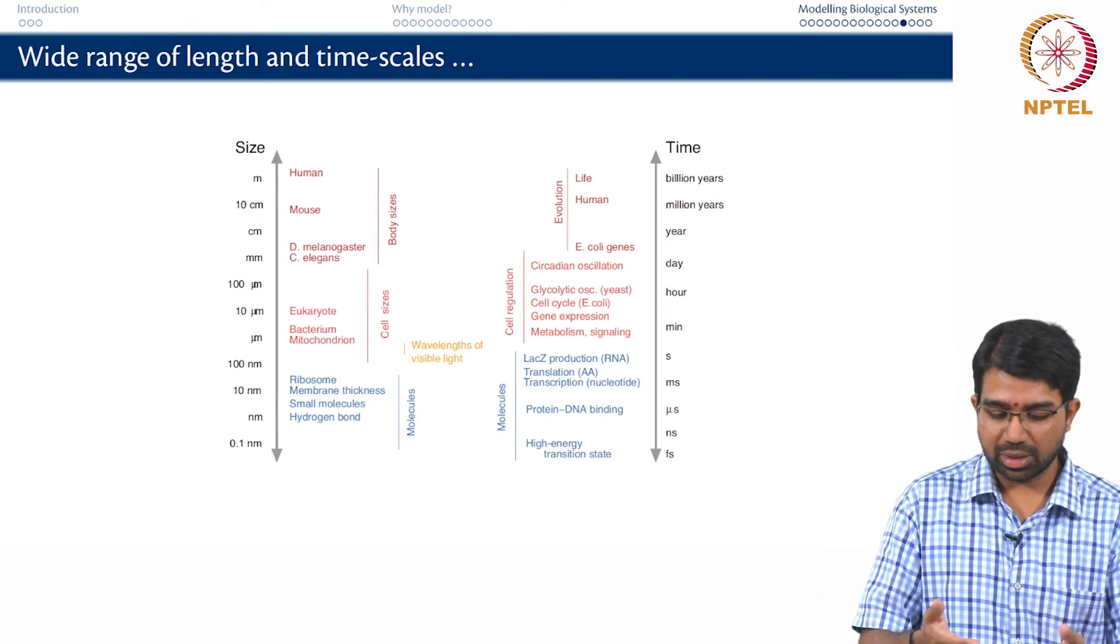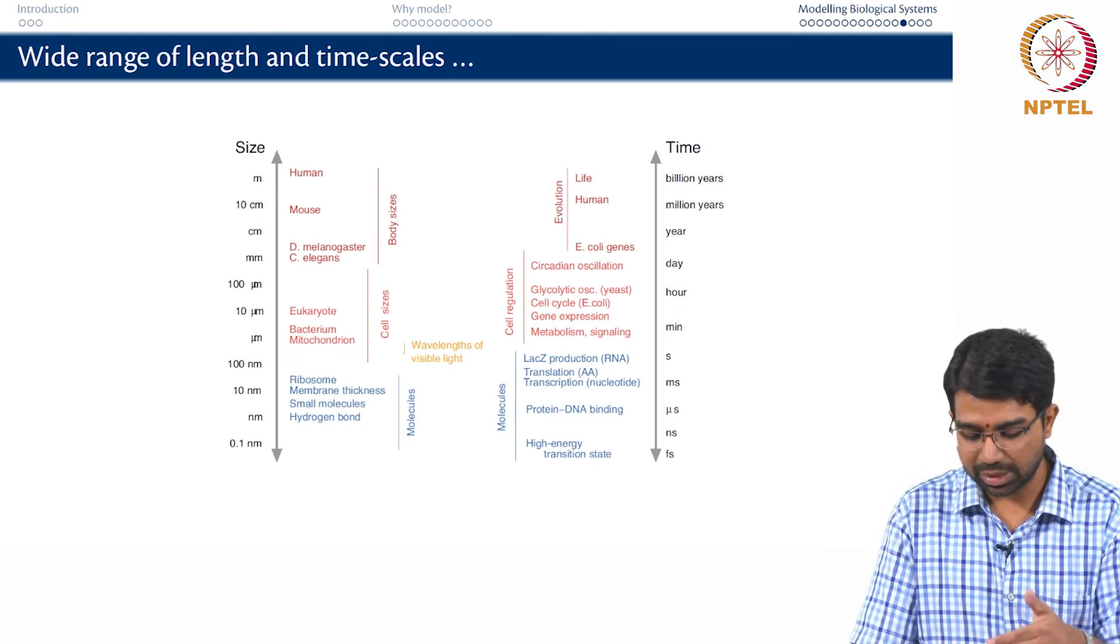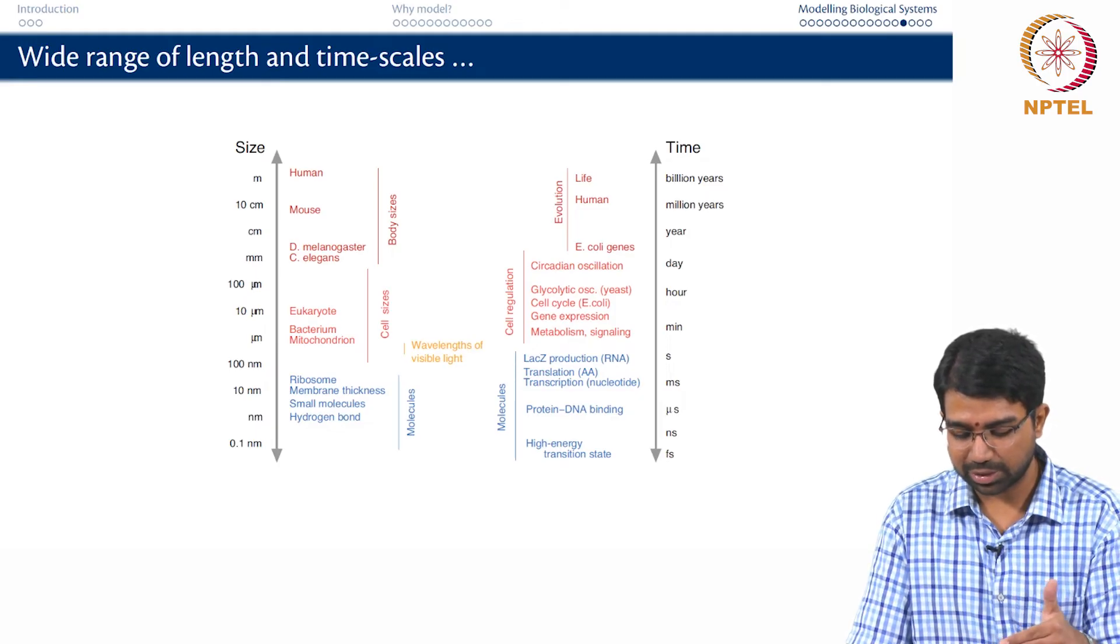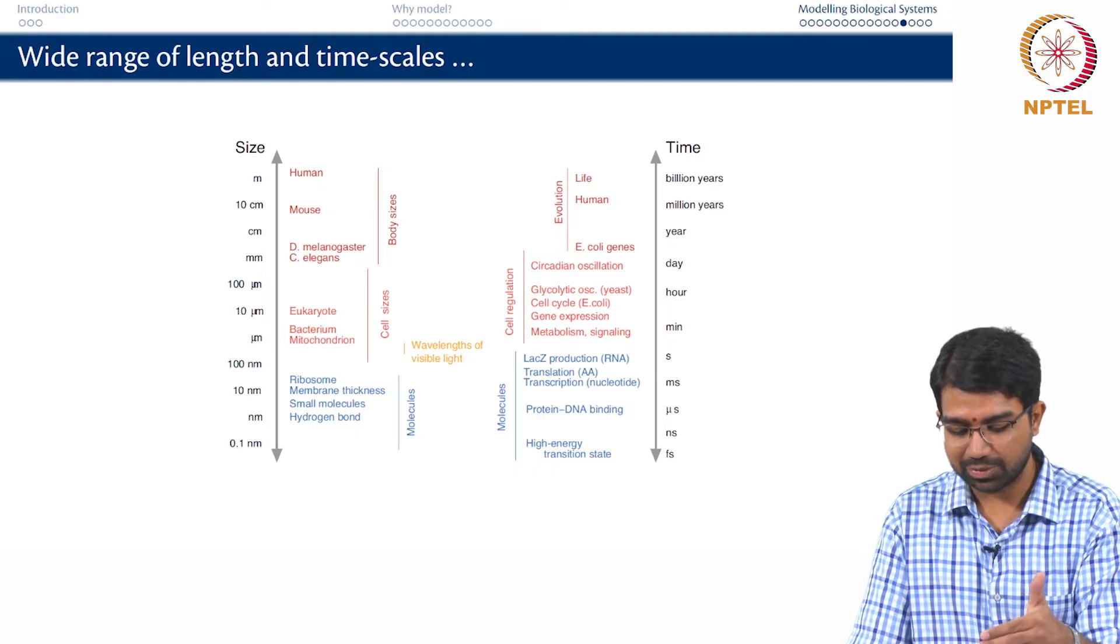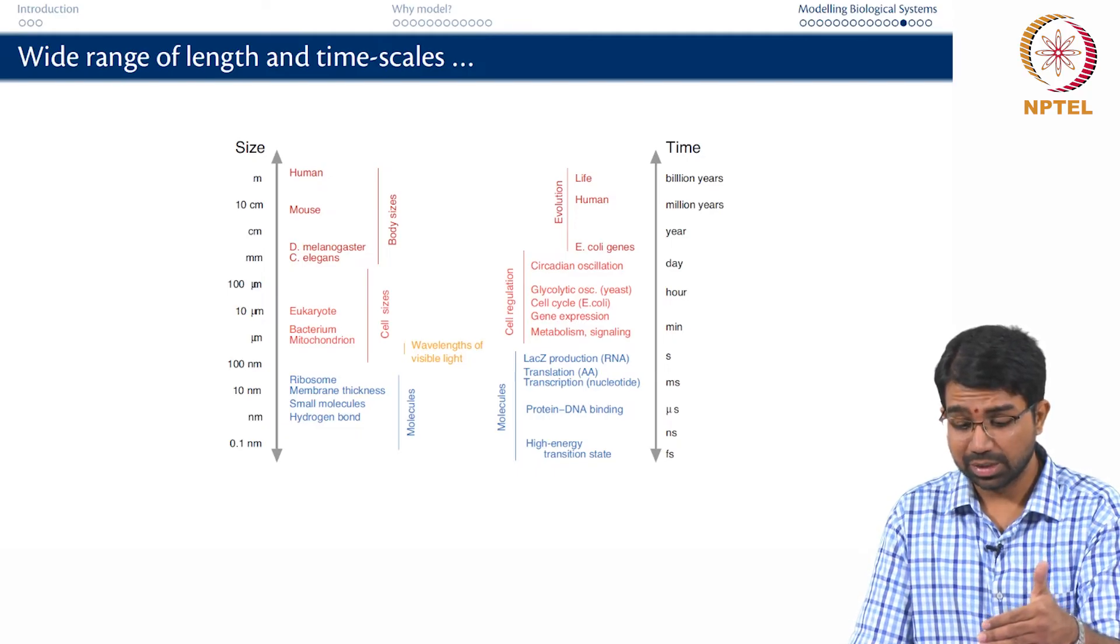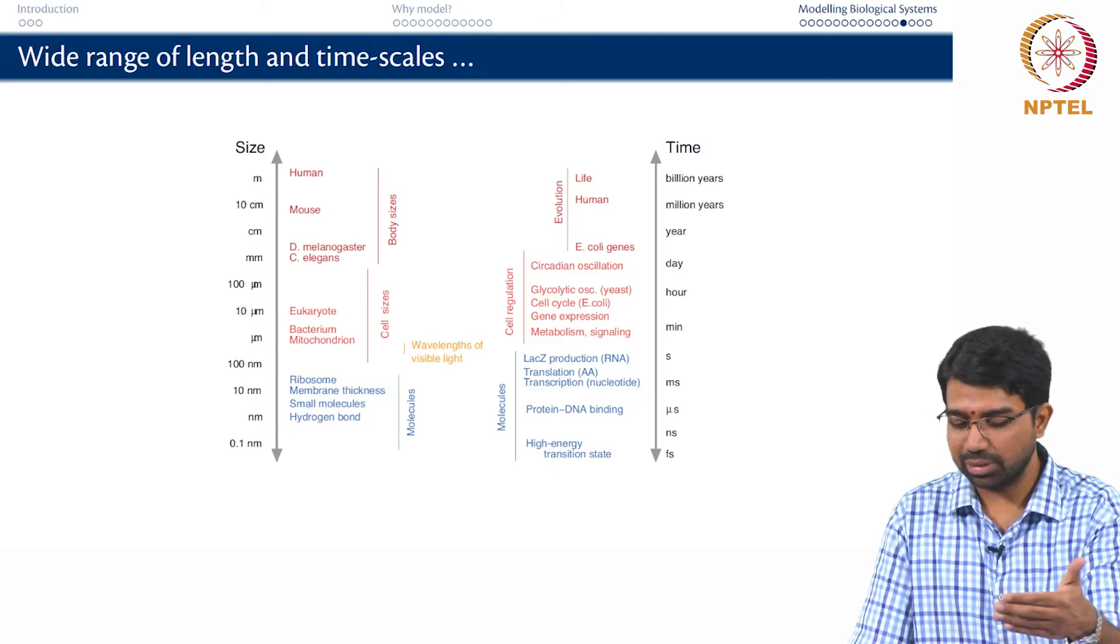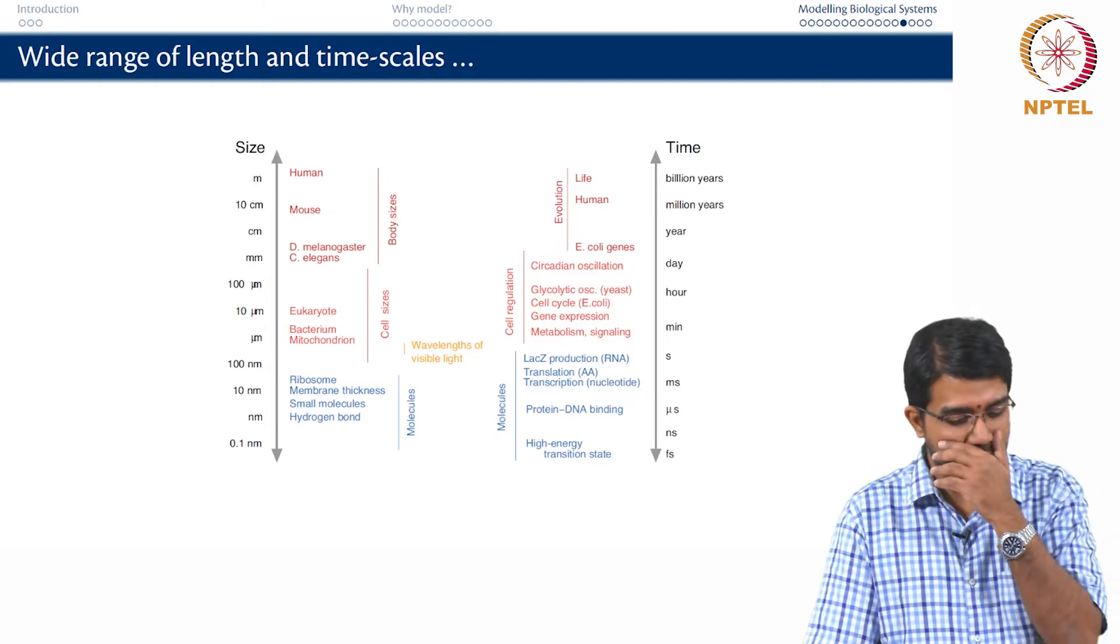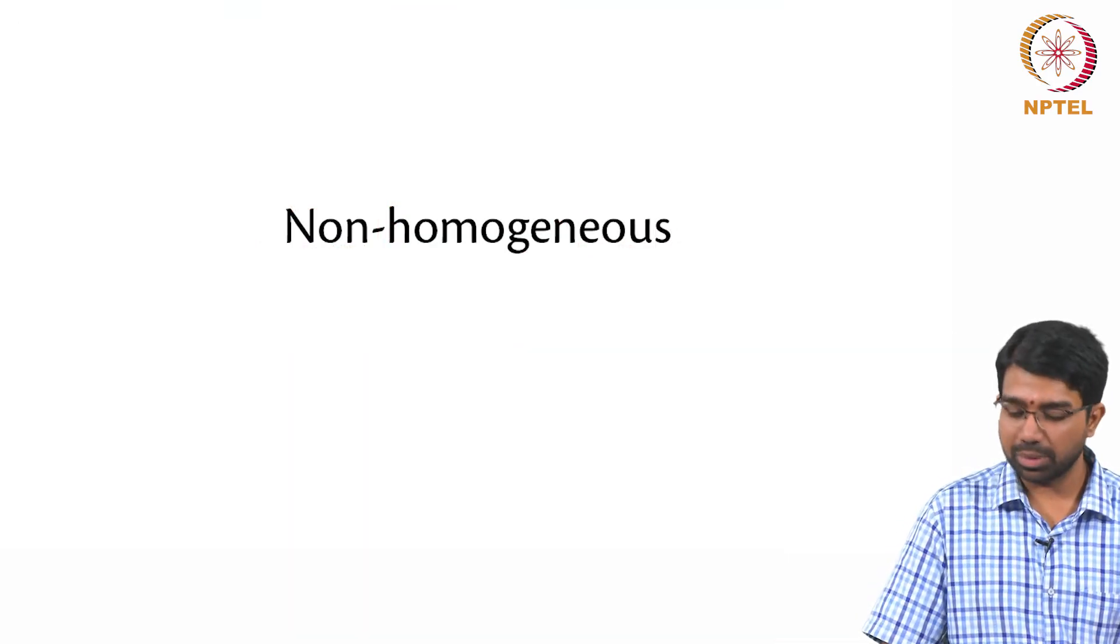And of course, this again lists some of the various timescales. You have transitions happening in femtosecond timescales, then you have transcription happening across milliseconds, minutes for metabolism, gene expression, circadian oscillations have days time period and so on, and evolution is even longer. And we already discussed about the non-homogeneity of biological systems.